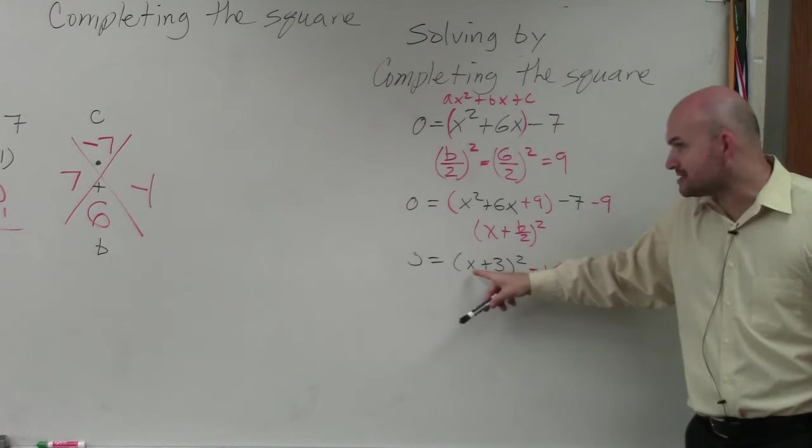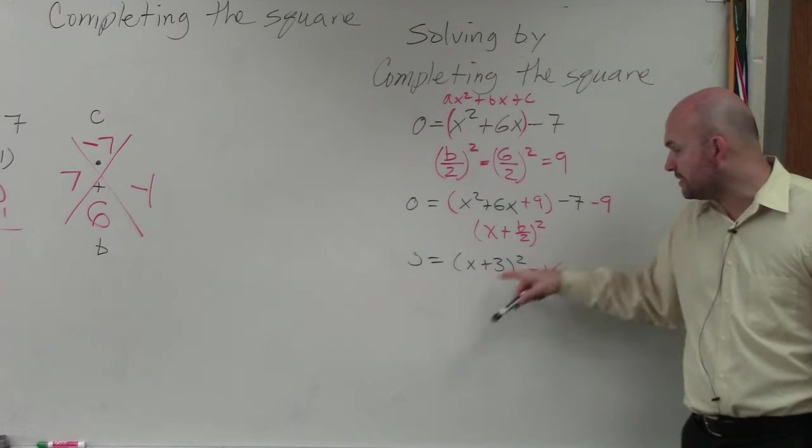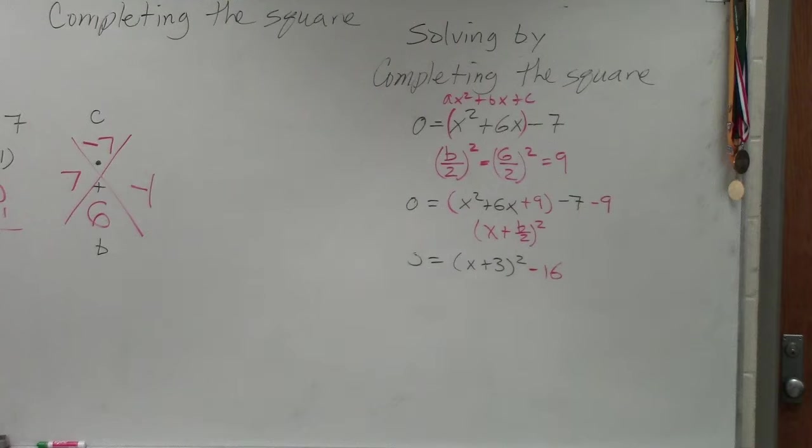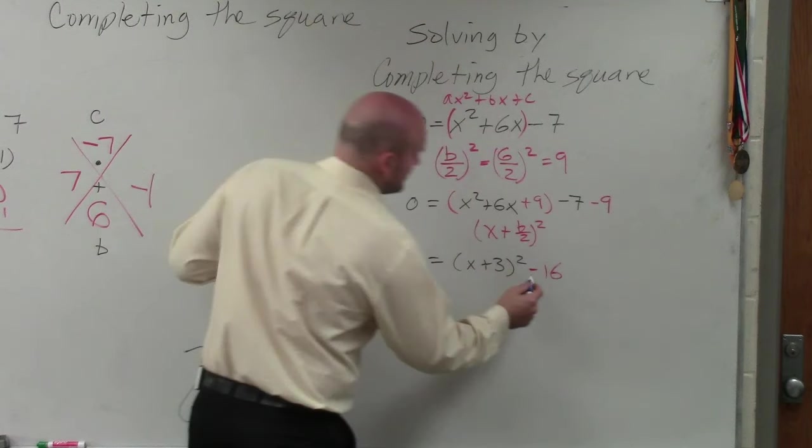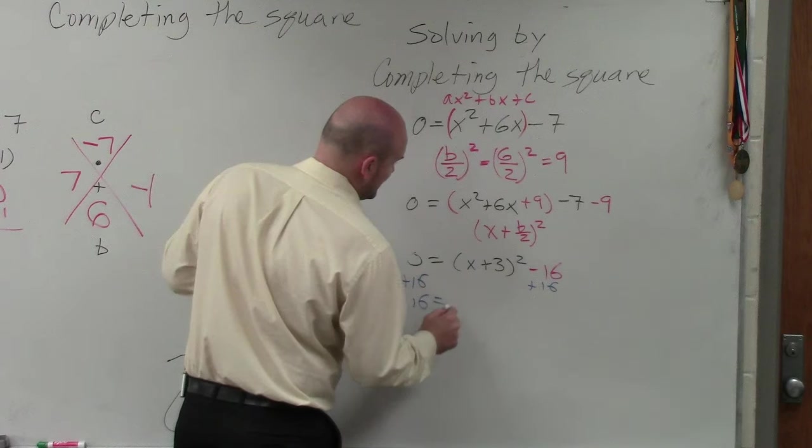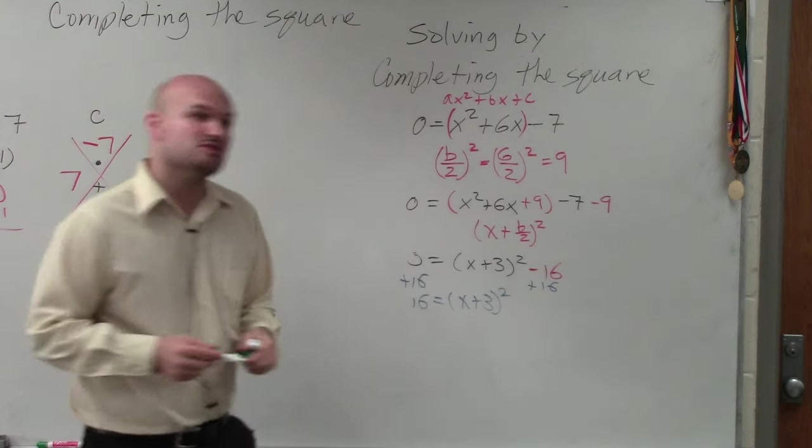So if I was going to solve for x, we need to look at what's happening to x. x is being added by 3, x is being squared, and x is being subtracted by 16. So the first thing we do is we're going to undo subtraction. So we add 16 to both sides. So you have 16 equals x plus 3 squared.